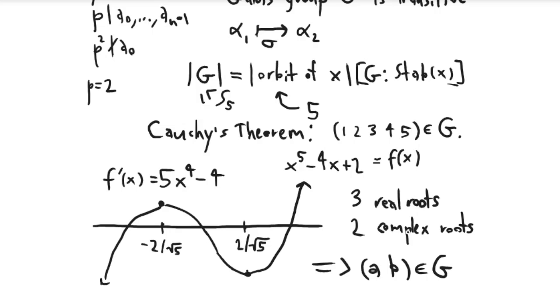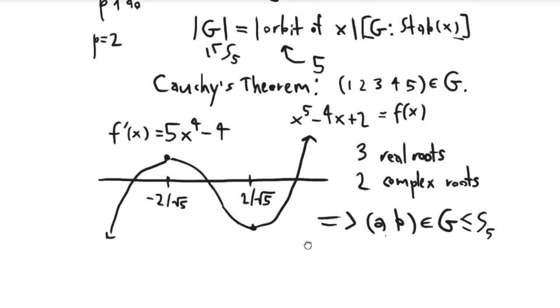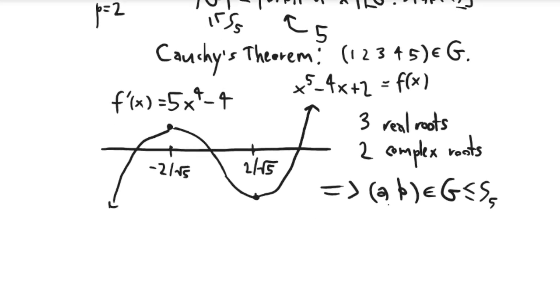Because whatever the complex roots are, there's a Galois automorphism that swaps them. And so if you think of G as being contained in S5, this is kind of what this would look like as a permutation in S5. Great, so now the two things that we know is that G contains a 5-cycle, and we also know that it contains a basic transposition.